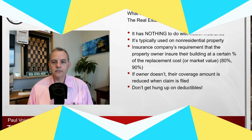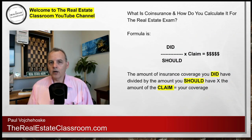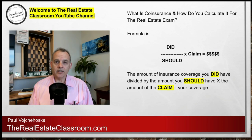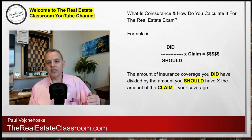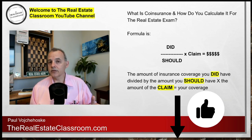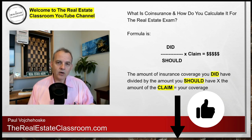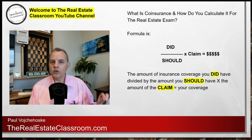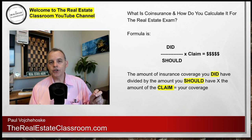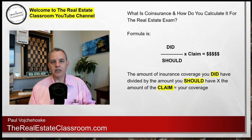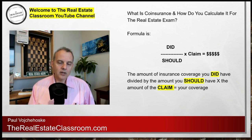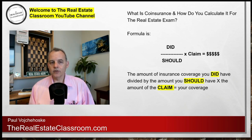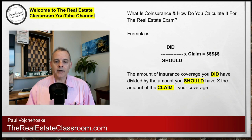So I'm going to show you how to calculate coinsurance. The formula is very simple to remember: it's did divided by should, times claim, equals the amount of your check. What that stands for is: how much coinsurance coverage did the owner have, divided by how much coinsurance coverage should the owner have had, times the amount of the claim submitted to your coinsurance carrier — and that equals the amount of the check you're going to receive to make those repairs on the property.